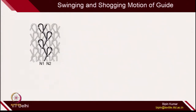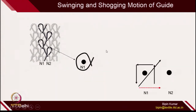This is the swinging and sogging motion for a particular simple structure. First, the guide comes to needle N1. Then for making the loop, it follows: one swinging, then sogging on the front side, then swinging again, then sogging on the back side. So these 4 steps we have to describe.